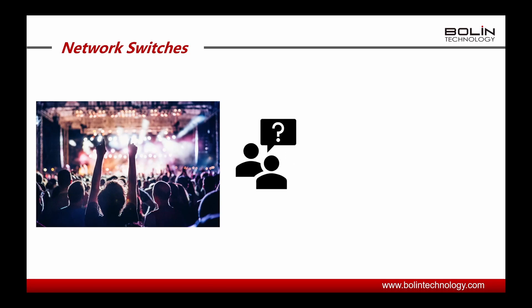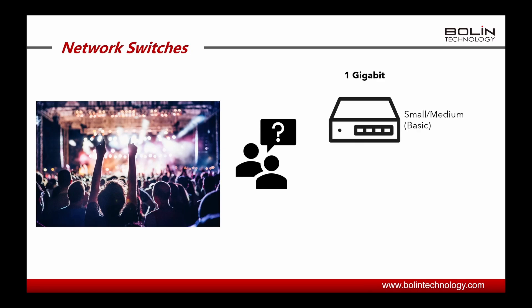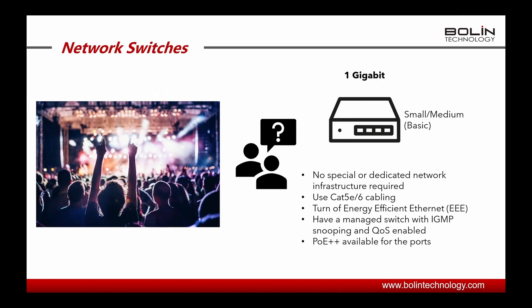So which network switch should you buy? For most basic applications, a one gigabit network switch should be able to handle all of your Dante enabled devices when it comes to audio and will work with most video devices on the network. You do not need any specialized network infrastructure for the Dante AV network — just make sure when selecting a network switch that it has the ability to turn off Energy Efficient Ethernet (EEE), and make sure that the network switch is a managed switch that has IGMP snooping available as well as QoS enabled.